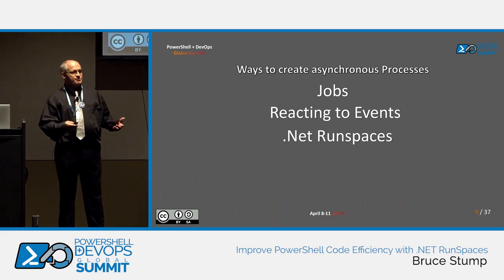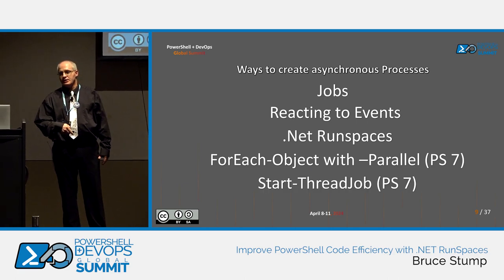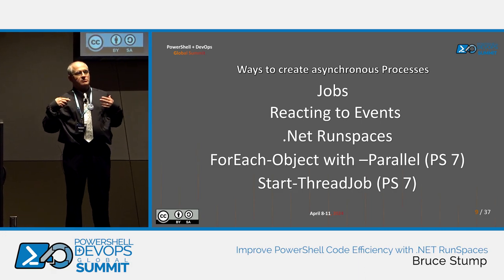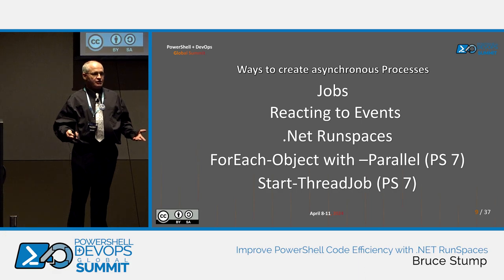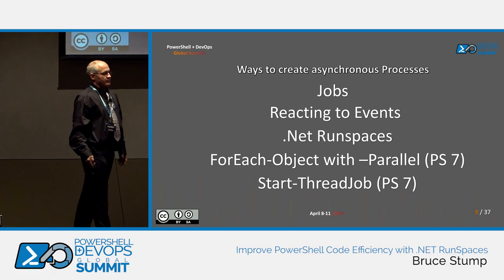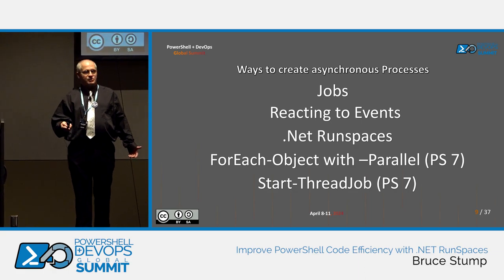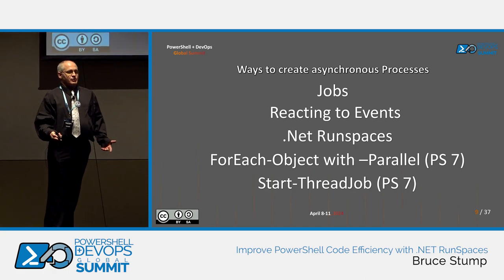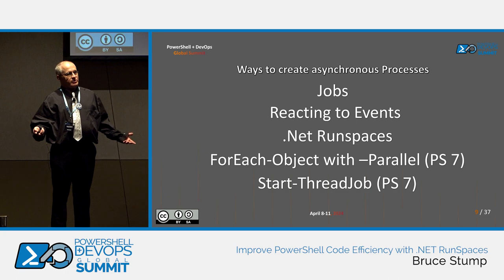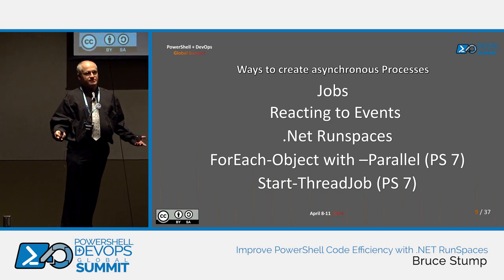Another option is .NET runspaces, which is what we're going to talk about. Unfortunately, foreach and start-threshold are only in PowerShell 7. When I had to resolve this issue, we were on Windows Server, which only has PowerShell 5. There is a way of doing it in PowerShell 5, which is workflow, using foreach and dash-parallel, but that was deprecated in PowerShell 6 and later.